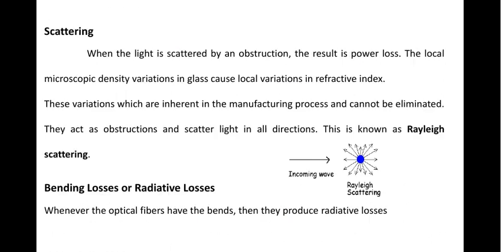The next type of loss is scattering loss. In the glass material of the fiber, some scattering of light takes place. The signal loss due to scattering is equivalent to Rayleigh scattering, where the loss of radiation is inversely proportional to the fourth power of the wavelength lambda. This results in a very small but present loss in the form of scattering.